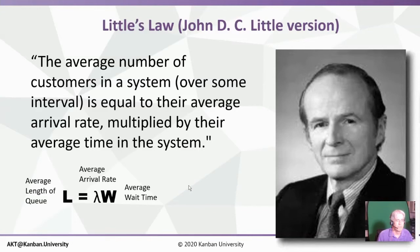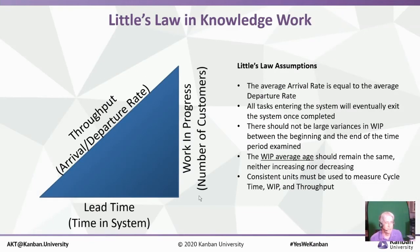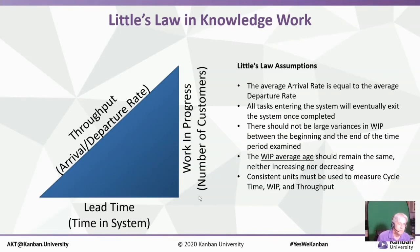What we have found frequently in delivery of knowledge work is this is often reformulated as: the average delivery rate is equal to average work in progress divided by the average lead time. It's basically a rate equation, going back to high school algebra — the slope of the line. Throughput, or average departure rate, equals the rise (work in progress) over the average lead time.